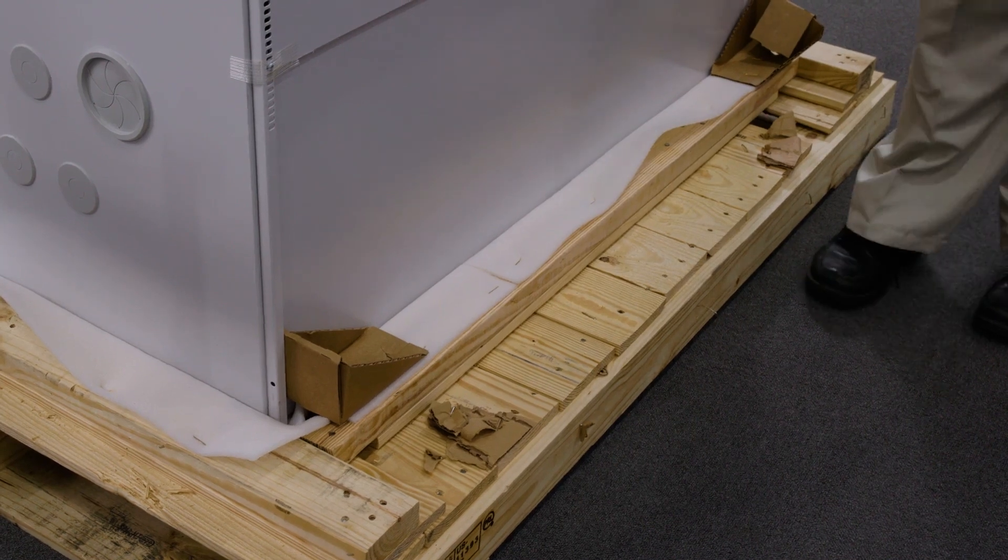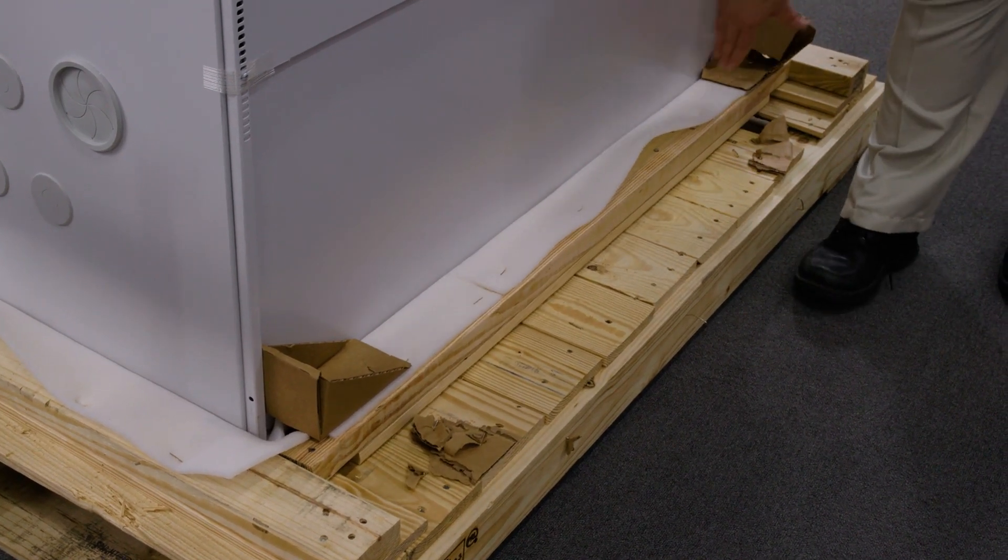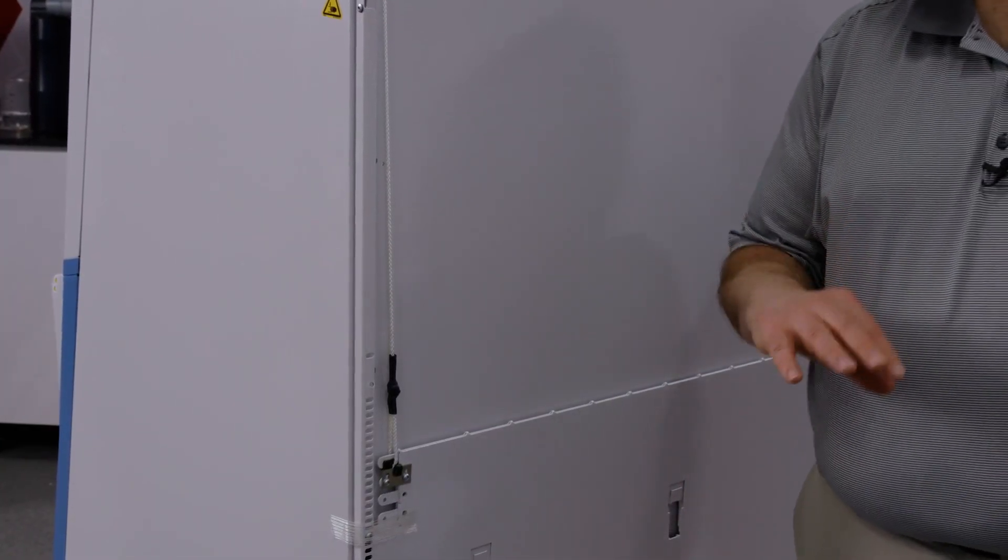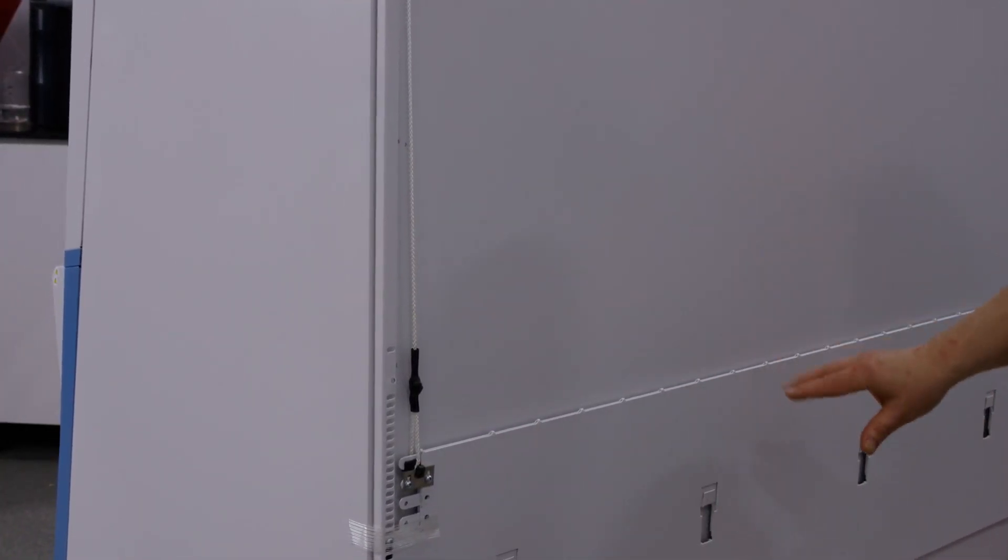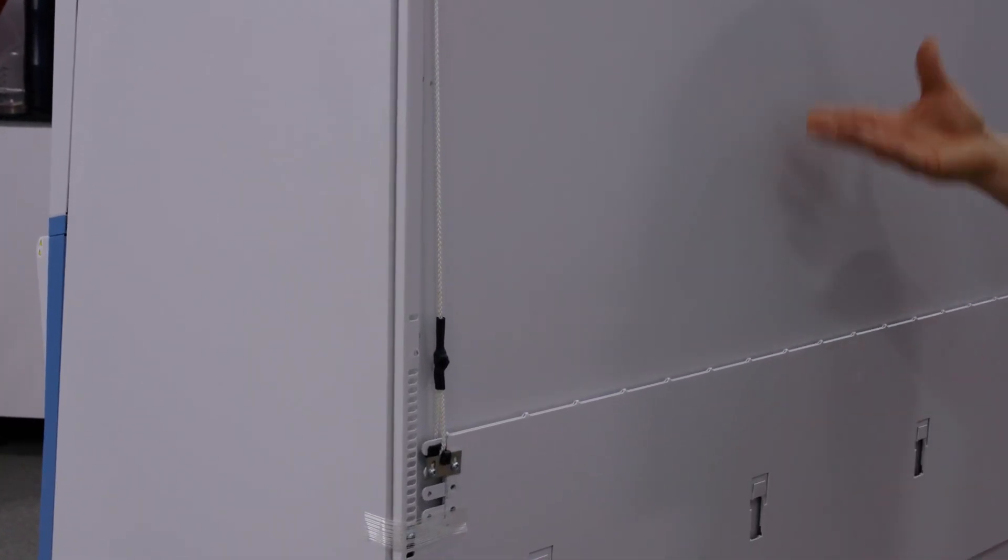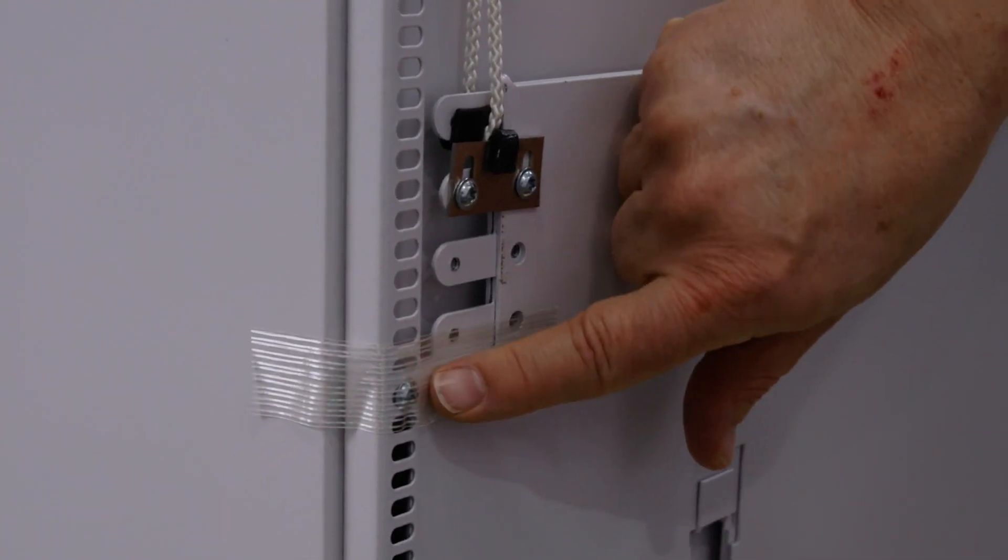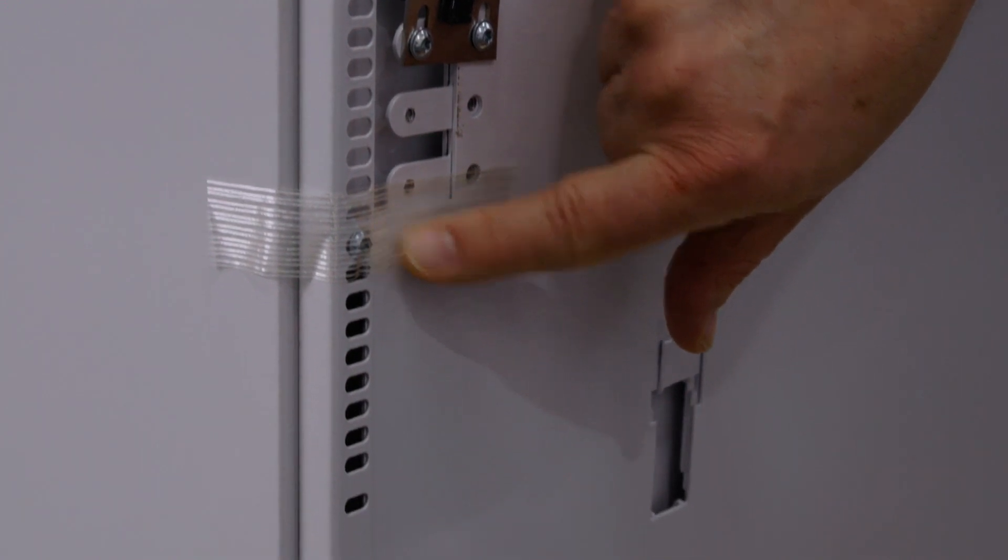One of the things you should think about is on the back of the unit, we have this counterweight to allow for the easy movement of the window up and down, and for shipping, it's secured at four locations, two on one side, two on the other.